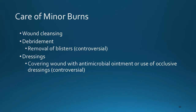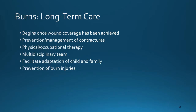Wound cleansing, debridement, and appropriate dressing are important when caring for minor burns. Removal of blisters is controversial, as is use of ointments and occlusive dressings, so it is important to use evidence-based practice. Long-term care begins once wound coverage has been achieved and involves prevention and management of contractures, physical and occupational therapy, use of a multidisciplinary team, facilitation of adaptation of the child and family, and prevention of burn injuries.